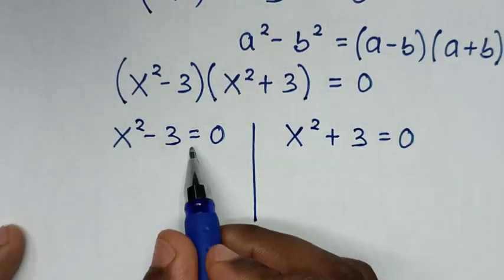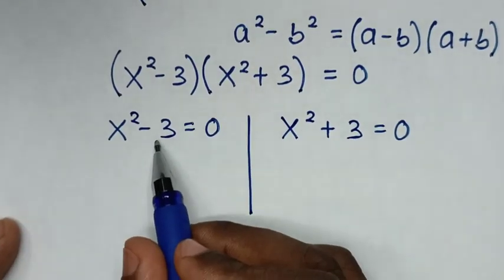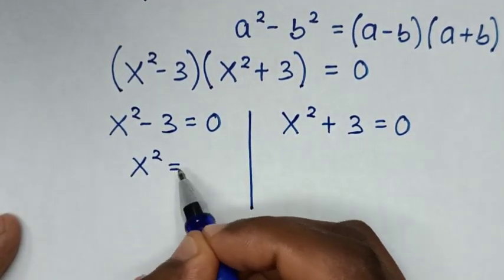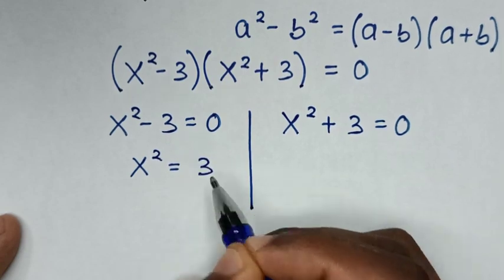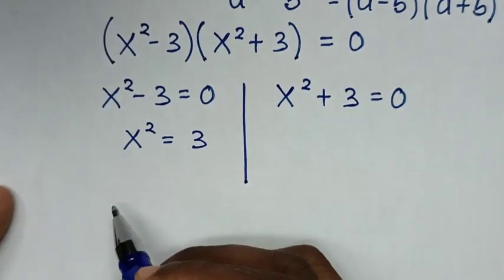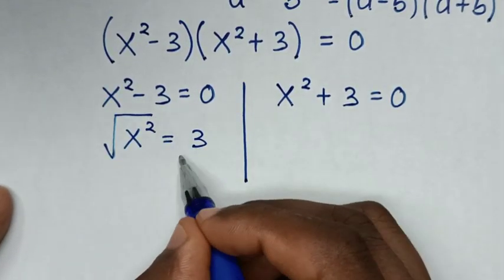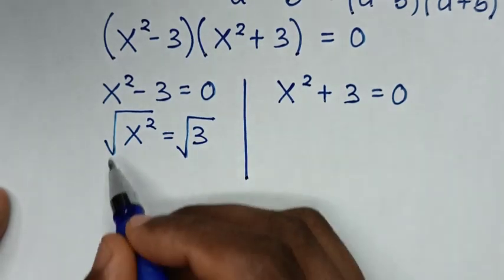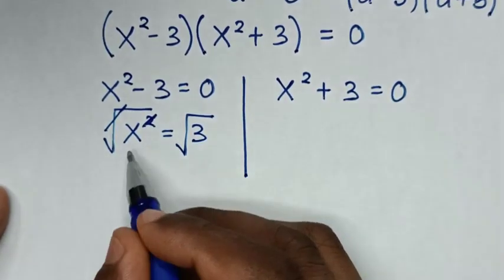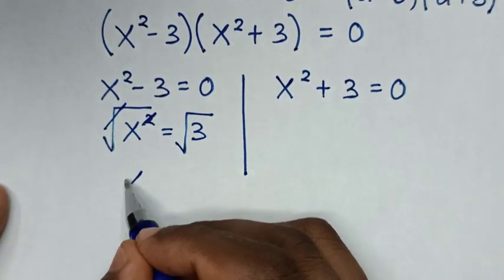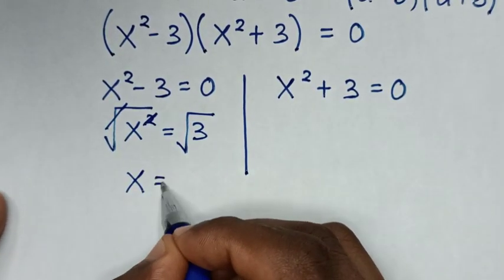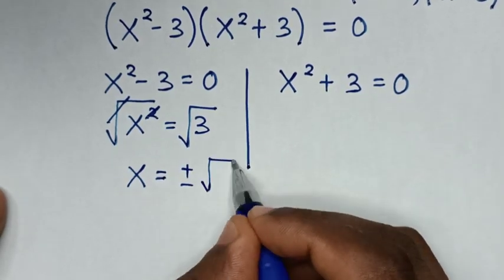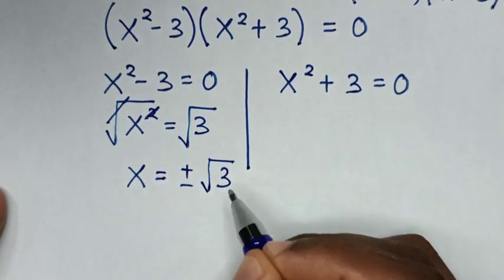From the first solution, we take negative 3 to the right side, so it will be x squared is equal to 3. Then we apply square root on both sides, so the square root will cancel with the square.